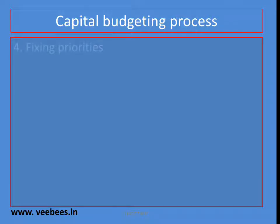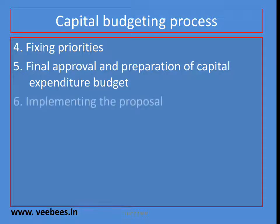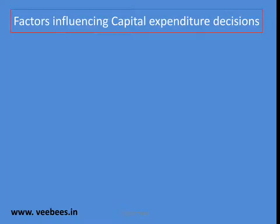The next stage is fixing the priorities. We will accept different proposals and fix priorities for them — which is first, which is second, which is third, and so on. Then comes final approval and preparation of capital budgets — we approve the proposals and prepare capital expenditure budgets. Next is implementation, where we implement the projects. Finally, review of performances — we evaluate the performances.